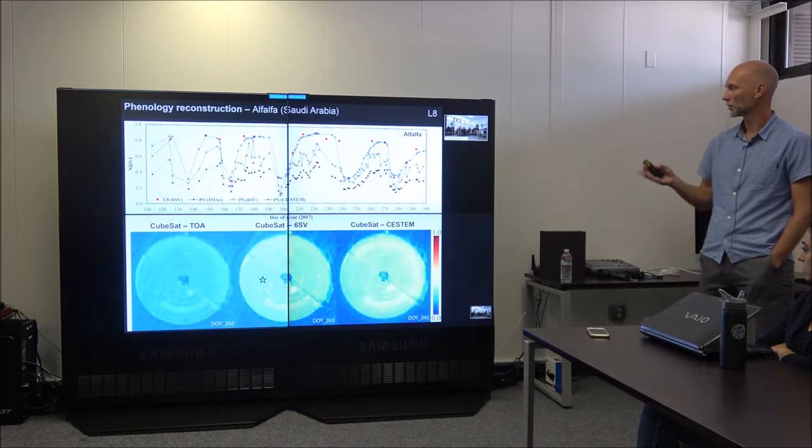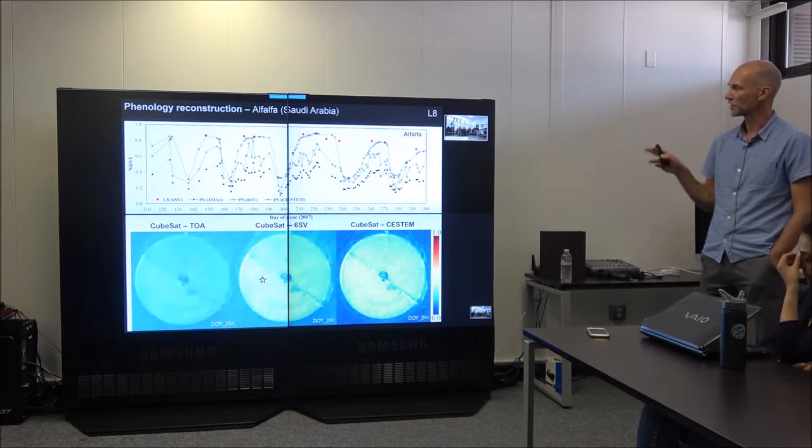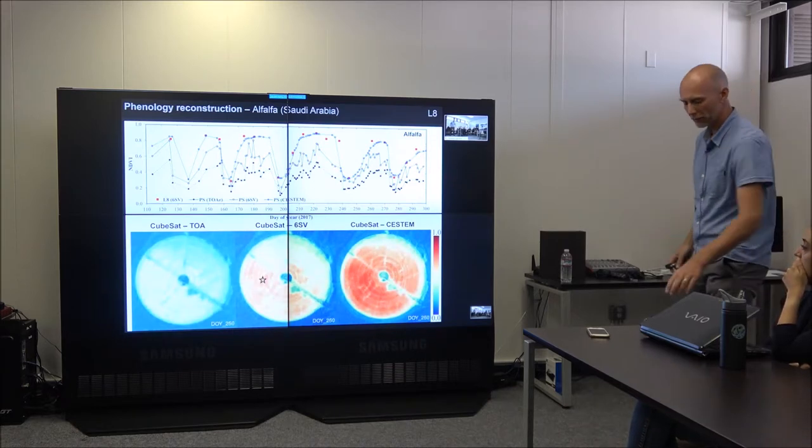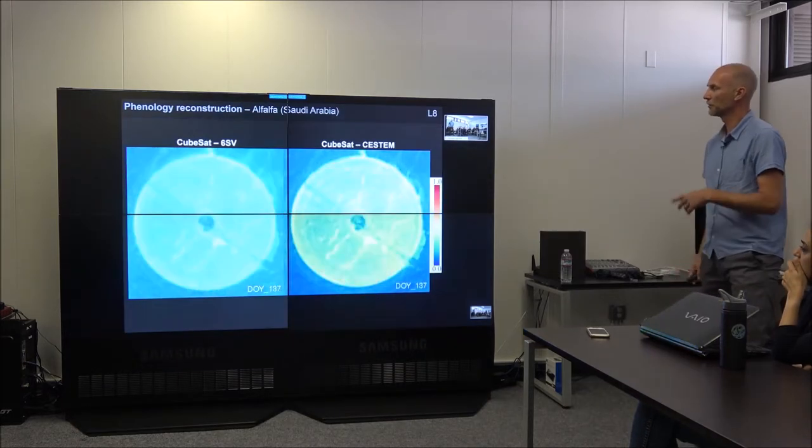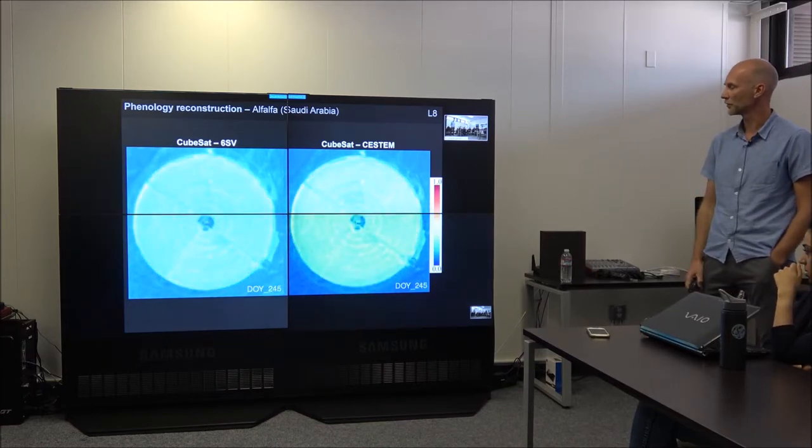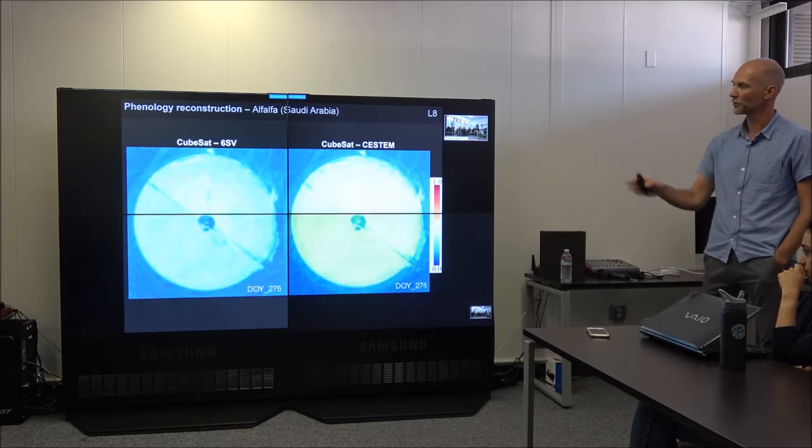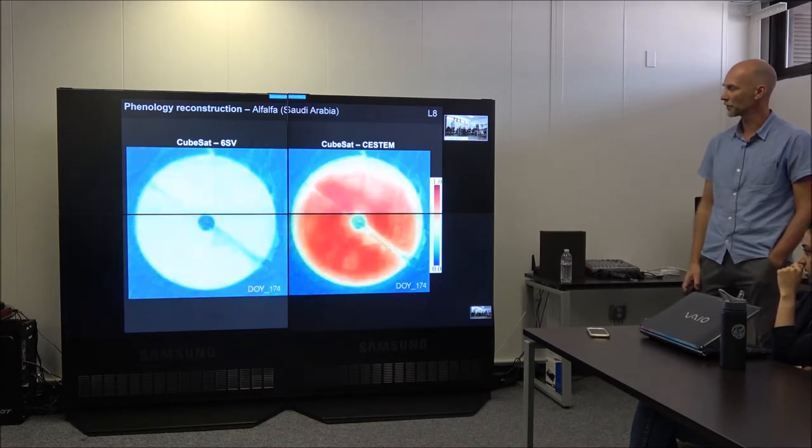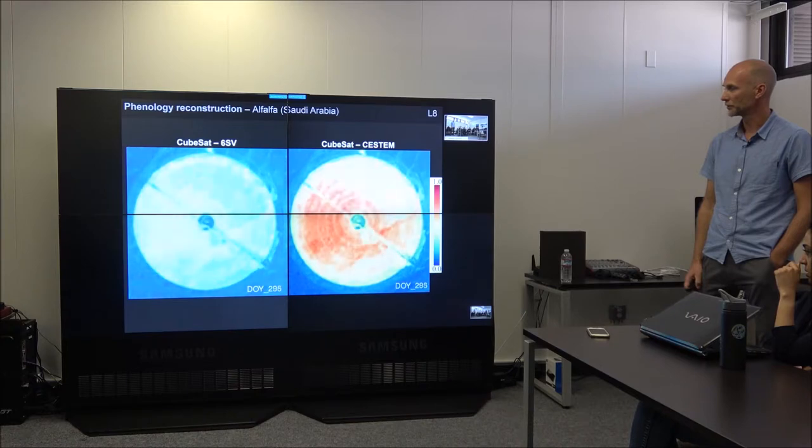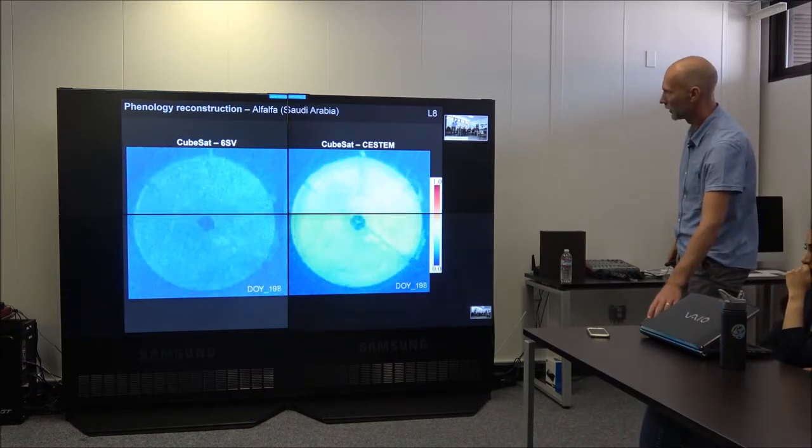And I'm gonna do a fast-forward animation showing the CubeSat data before and after CESTEM correction. You also get a sense of kind of the noise in the original data, and the utility of CESTEM for correcting that, using a more consistent and reliable time series. Kind of jumps up and down on the left.